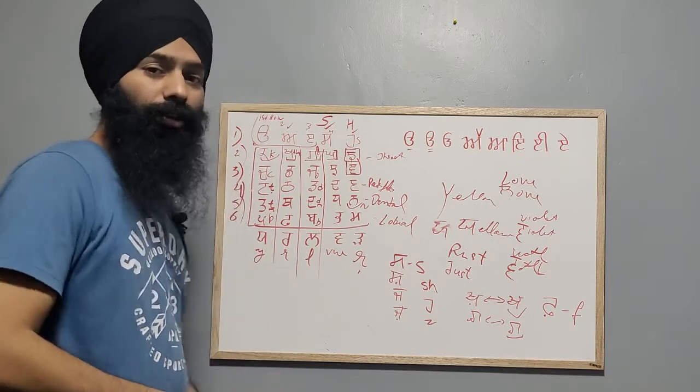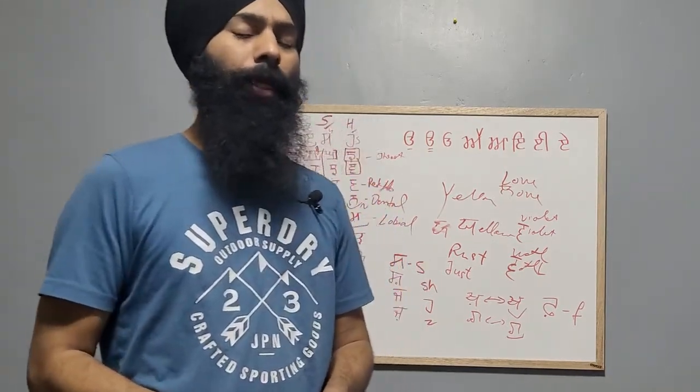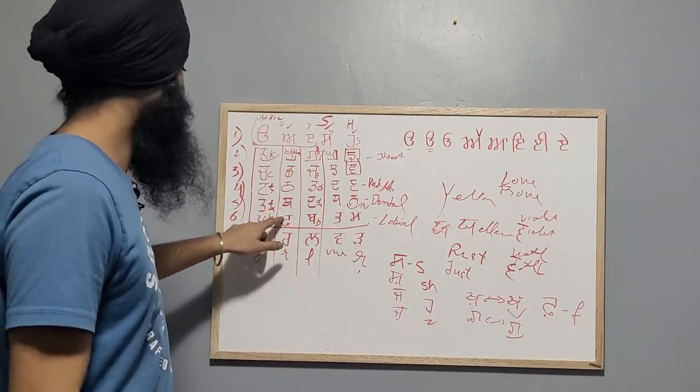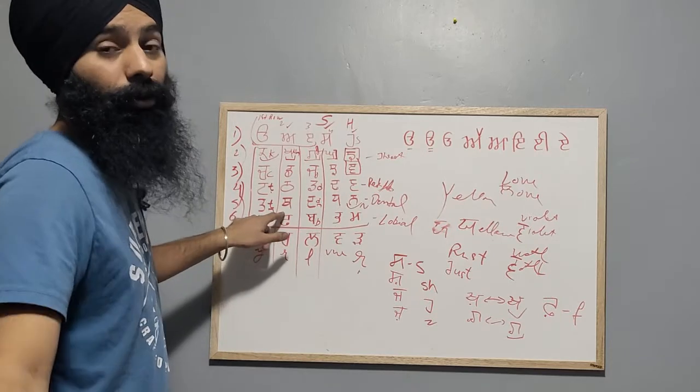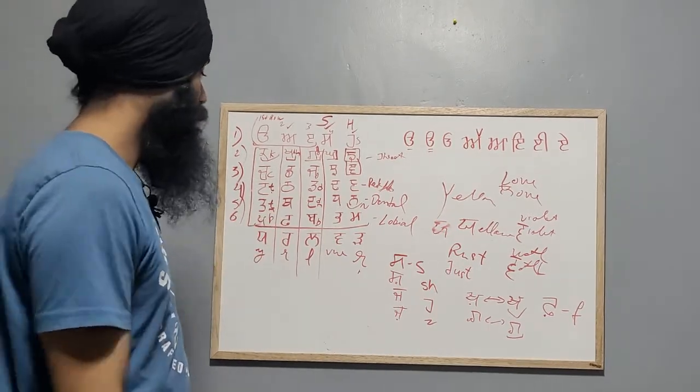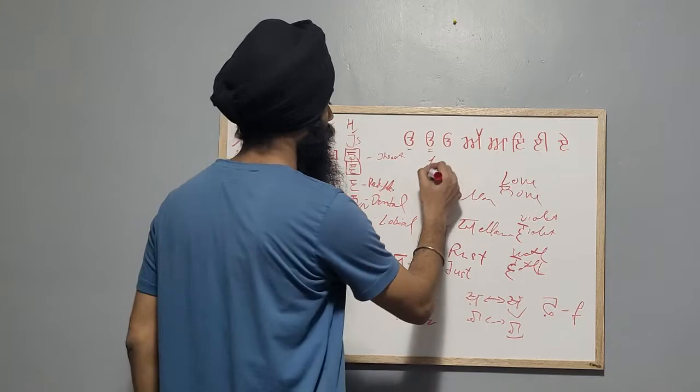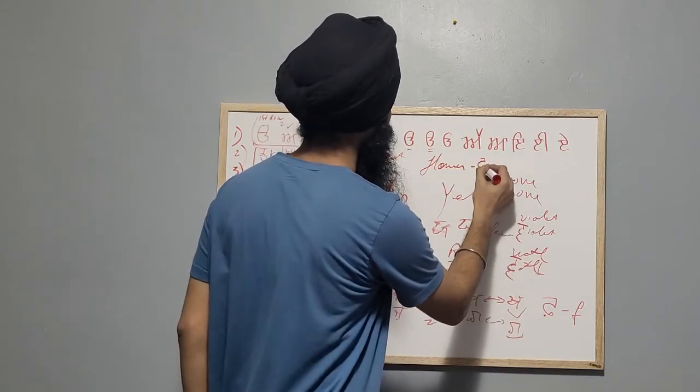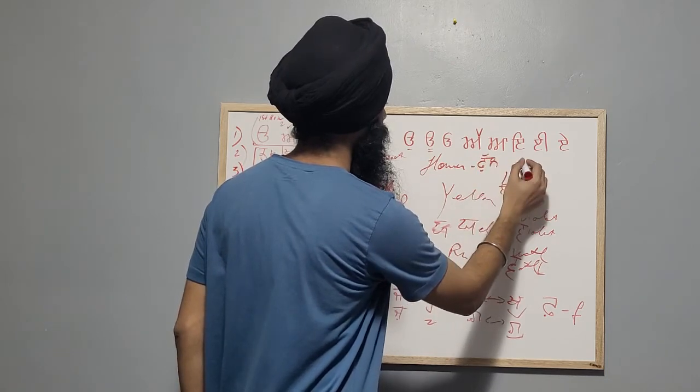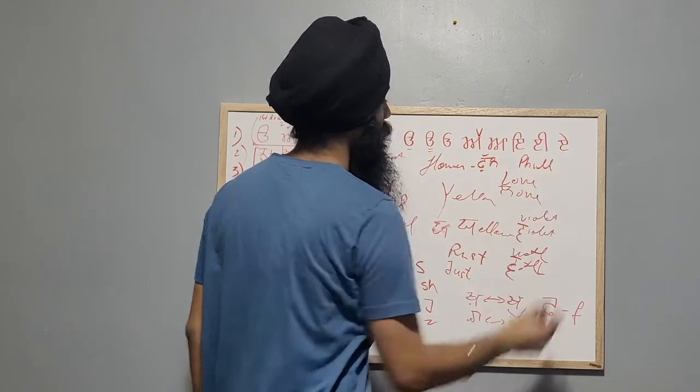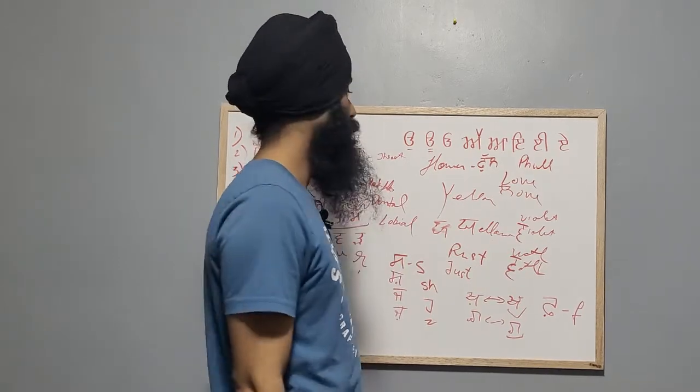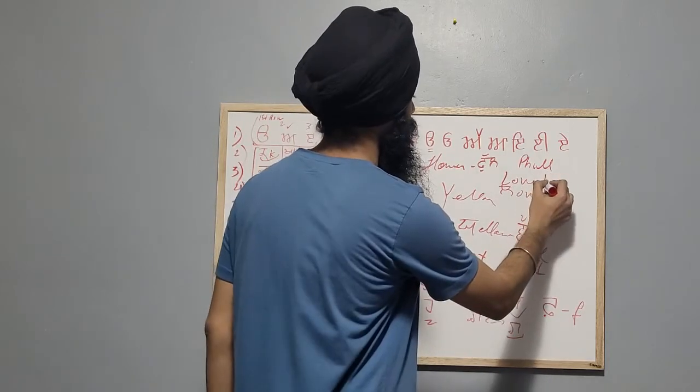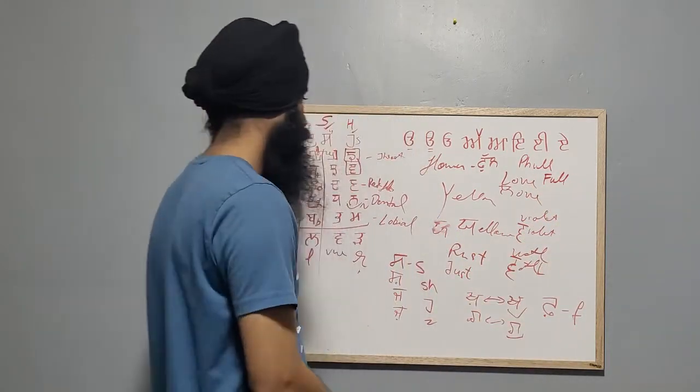But I'll tell you an interesting thing. You will see a lot of Punjabis speaking this word FHA as PHA. For example, the word for flower is 'full', but you will find many Punjabis pronouncing it as 'pull'.